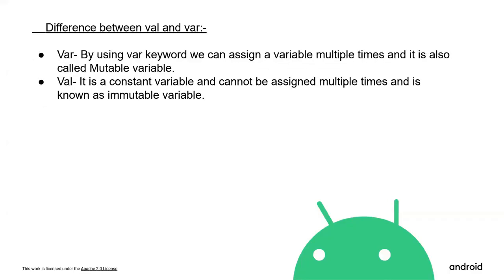I hope you all might be having a confusion about what val and var mean. Using the var keyword, we can assign a variable multiple times — it is also called a mutable variable. Val is the same as the final modifier in Java. We cannot assign to a final variable again, but can change its property. So val is a constant variable that cannot be assigned multiple times and is known as an immutable variable.